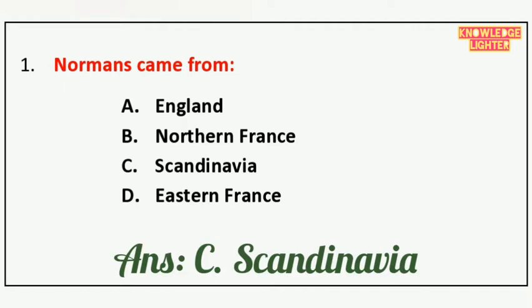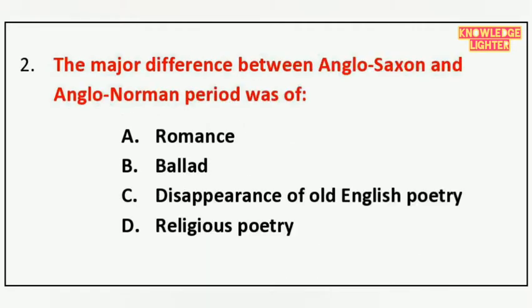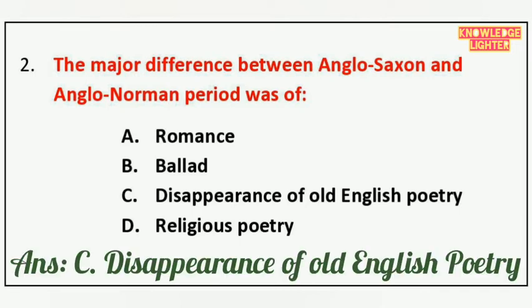Your next question is: The major difference between Anglo-Saxon and Anglo-Norman period was of — option A Romance, option B Ballad, option C Disappearance of Old English Poetry, option D Religious Poetry. And the correct answer is option C Disappearance of Old English Poetry.